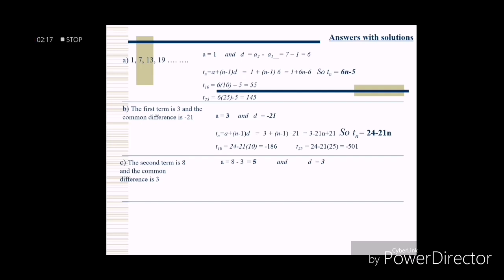For the third problem, the second term is 8 and the common difference is 3. Since the first term is not given, we find it: a equals 8 minus 3 equals 5. Using the formula: t sub n equals 5 plus (n minus 1) times 3. Distributing gives t sub n equals 3n plus 2. For the 10th term: t sub 10 equals 3 times 10 plus 2 equals 32. For the 25th term: t sub 25 equals 3 times 25 plus 2 equals 77.